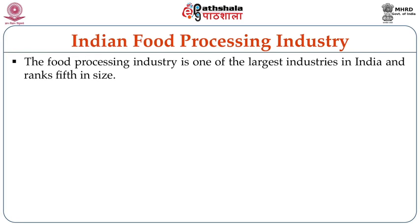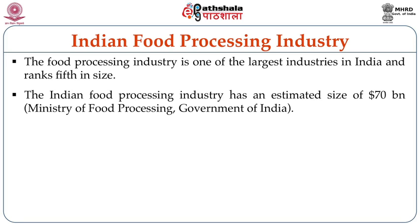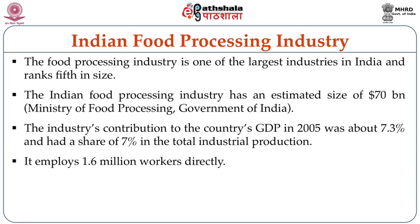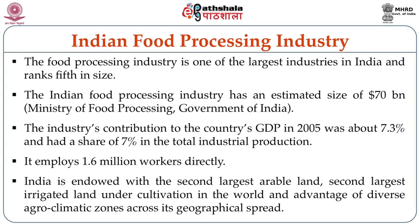The Indian food processing industry is one of the largest industries in India, ranking fifth in size compared to all other industrial sectors. It has an estimated size of 70 billion dollars as reported by the Ministry of Food Processing, Government of India. Its contribution to the country's GDP in 2005 was about 7.3 percent, with plans to increase the current GDP from the food processing sector. The Ministry has plans to increase the amount of food processing from the current 2 to 3 percent to a much higher level. The Indian food sector also employs more than 1.6 million workers directly. India is endowed with the second largest arable land and second largest irrigated land under cultivation in the world, with diverse agro-climatic zones.